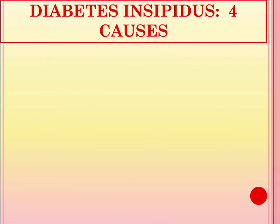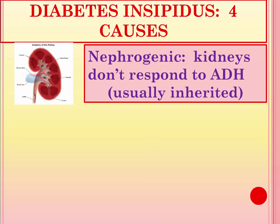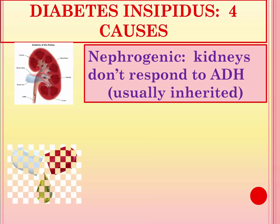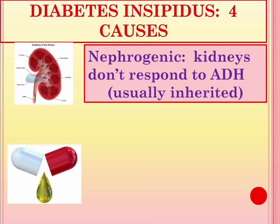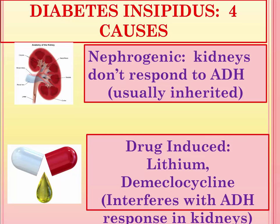There are four major reasons one could experience diabetes insipidus. The first is nephrogenic in nature — the kidneys simply don't respond to antidiuretic hormone, and this type is usually inherited. The second is drug-induced diabetes insipidus. Lithium is a common culprit; about 10% of individuals taking lithium as a mood stabilizer will experience diabetes insipidus. There is also an antibiotic called demeclocycline, which is a tetracycline that interferes with the antidiuretic hormone response in the kidneys.